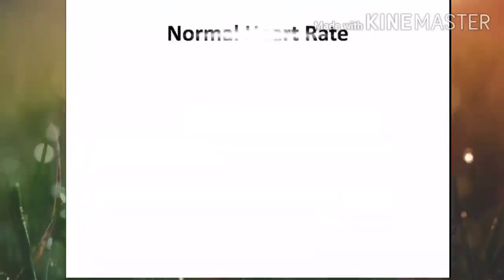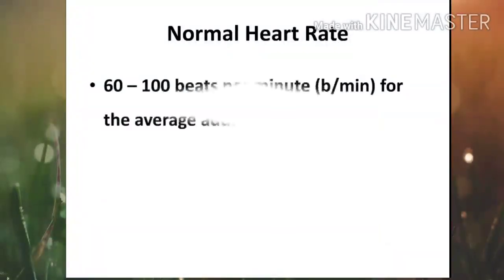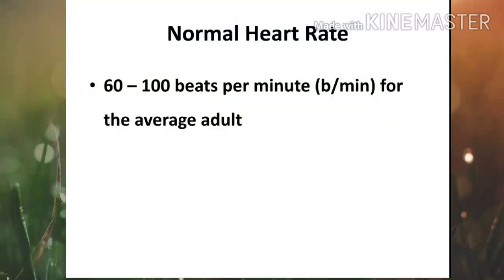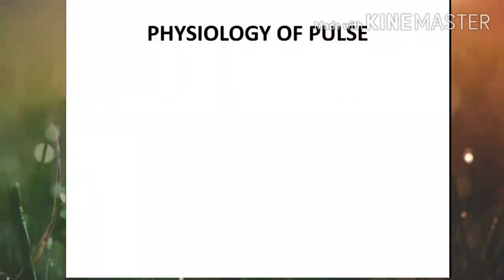The normal heart rate of an average adult is 60 to 100 beats per minute. Next is the physiology of pulse.